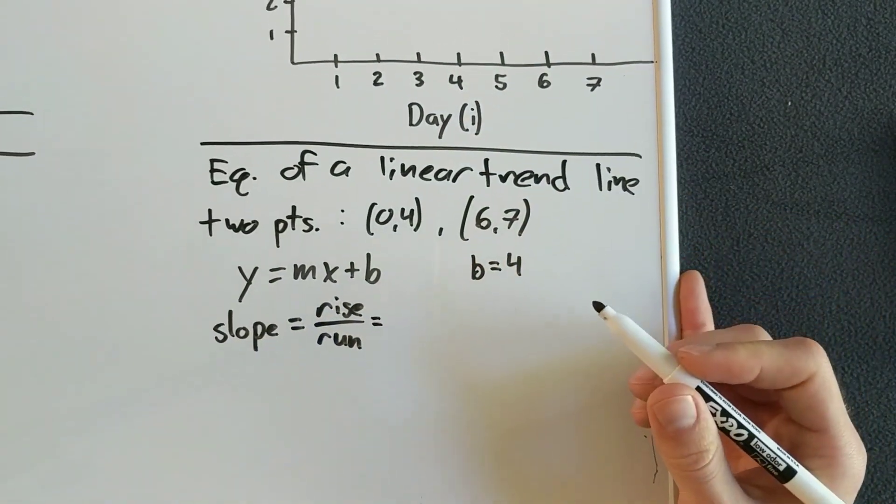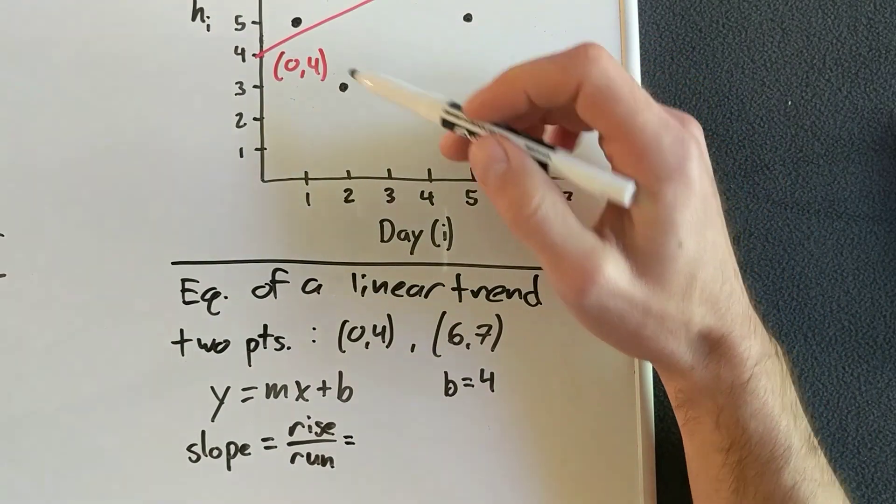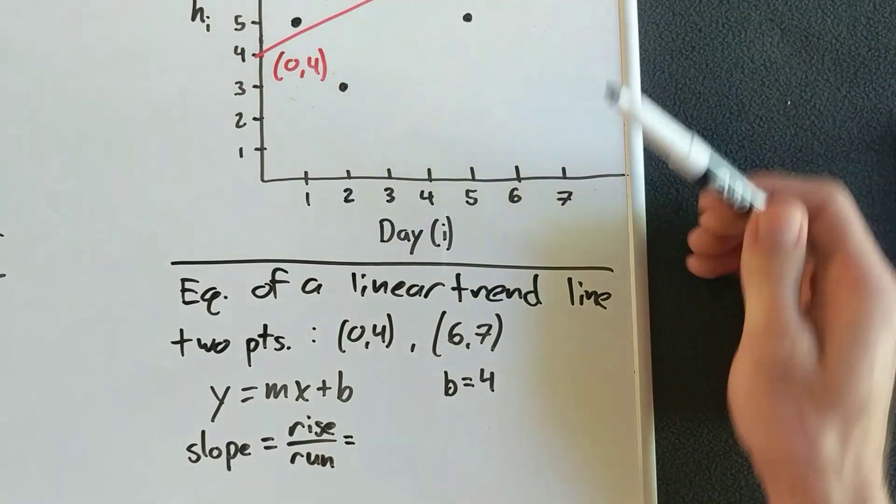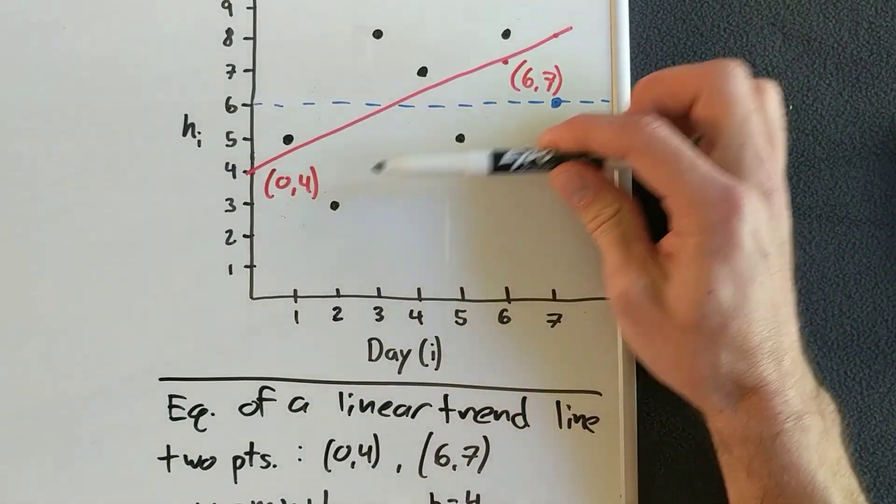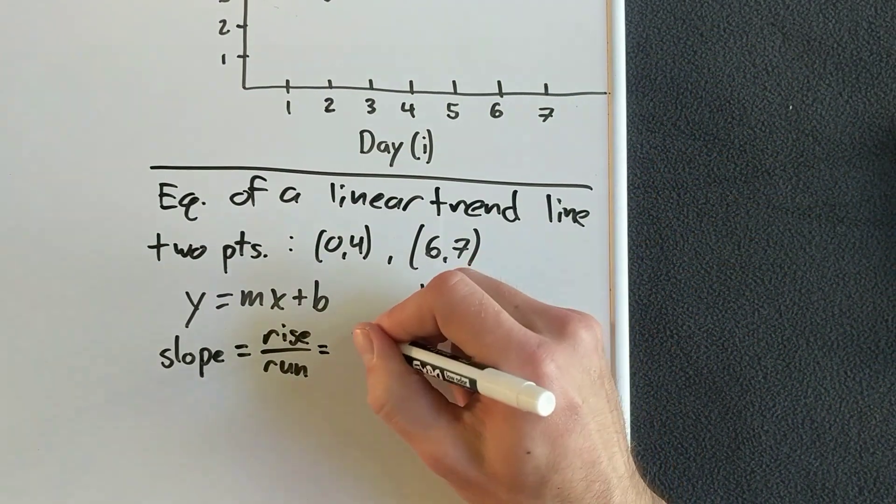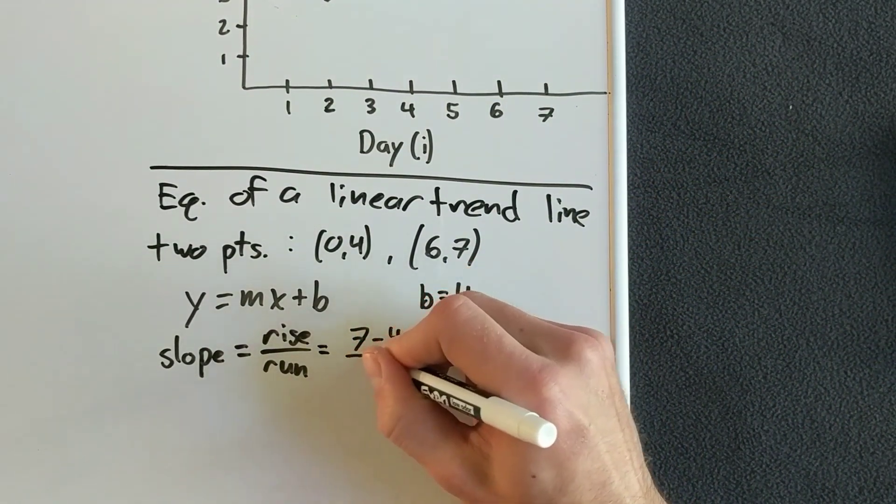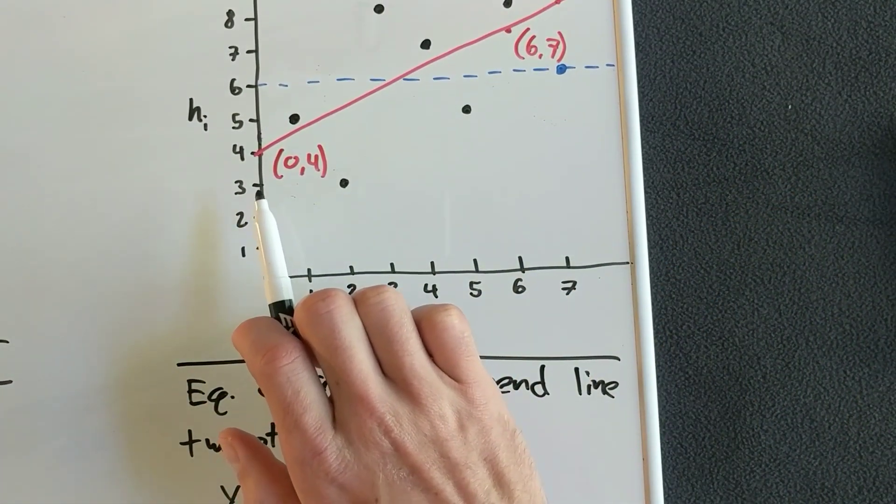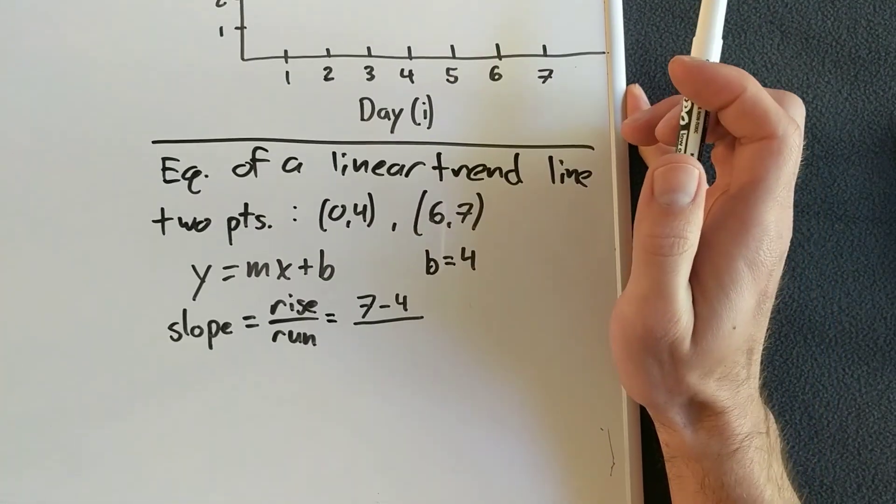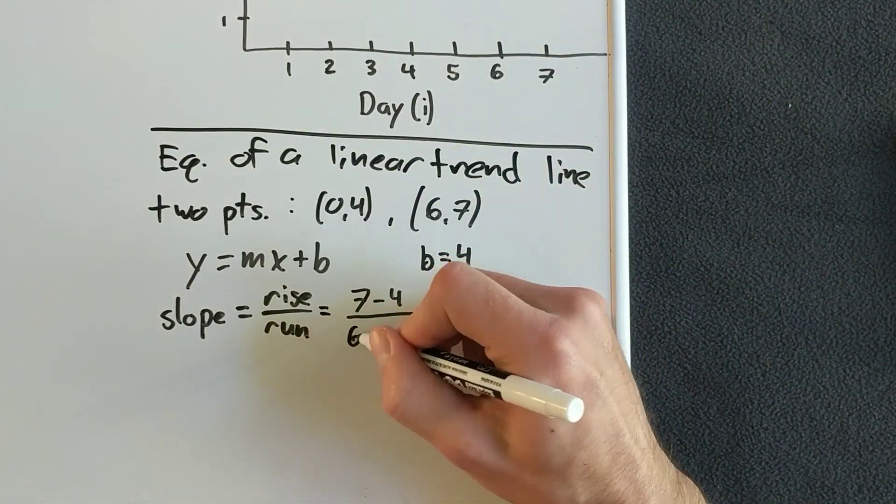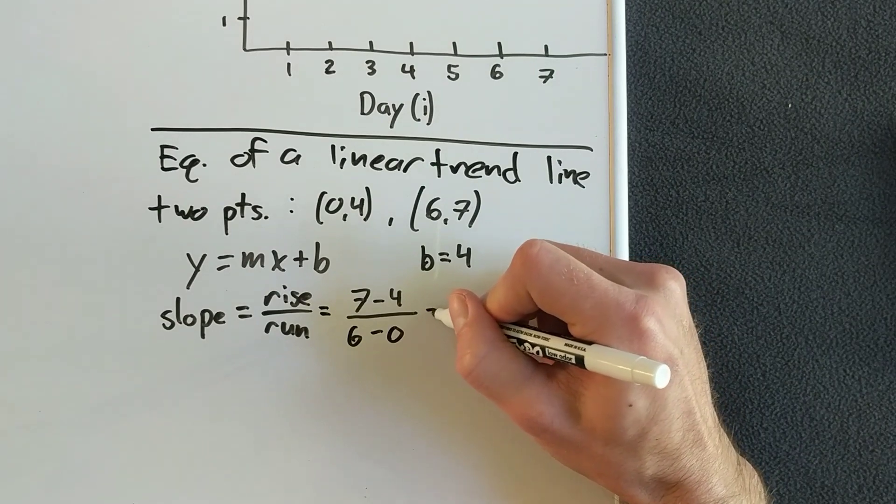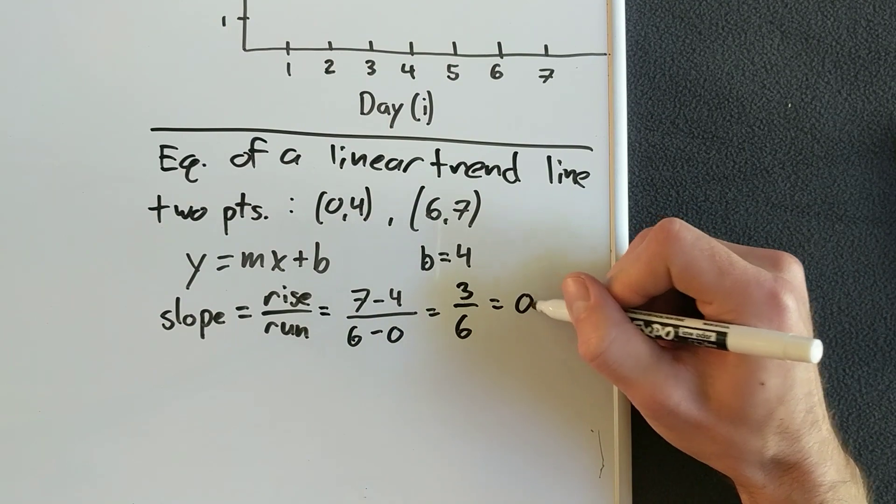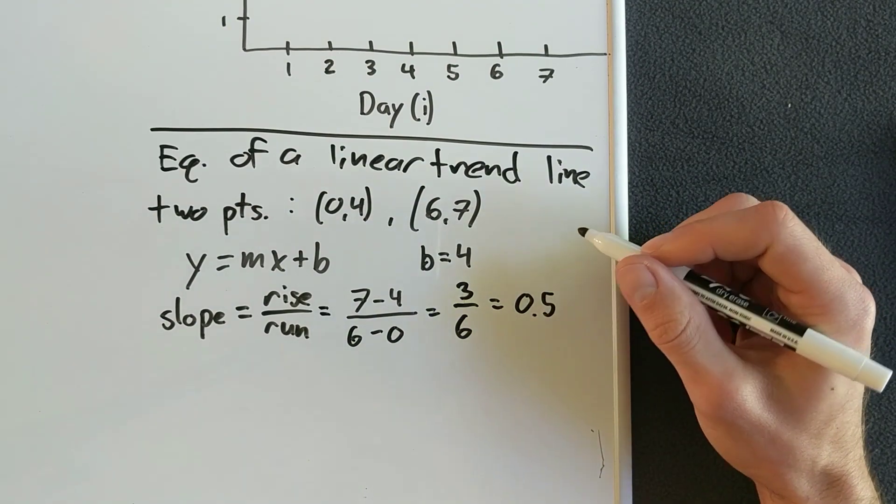And so for us, what is the rise? So between the two points, the rise goes from four to seven. To calculate that rise, we'll do seven minus four. And what's the run? That's this direction. So how far are we running? So we're going from zero to six. So to specifically calculate that, I would do six minus zero. So this now gives us three divided by six, which is equal to 0.5. So this is our m.